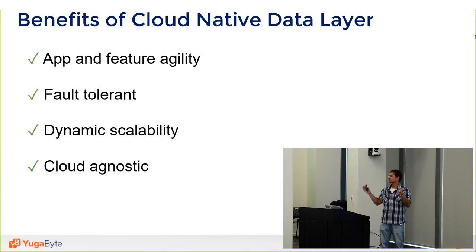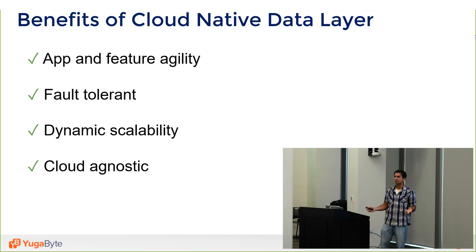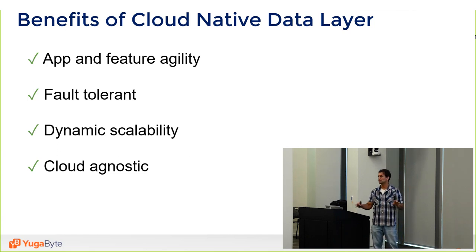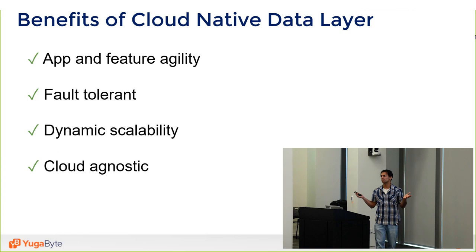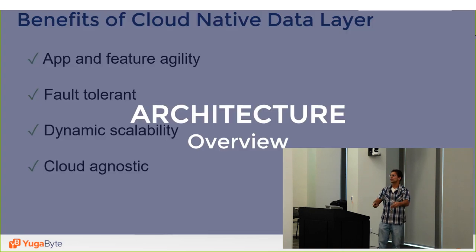What this enabled: build your app and features with a lot more agility because it embraces the cloud-native way. It's fault-tolerant regardless of which API you use, it has scalability without worrying about sharding the cache and the database separately, and it's cloud-agnostic — containerized and deployable anywhere, whether bare metal, VM, or containers.